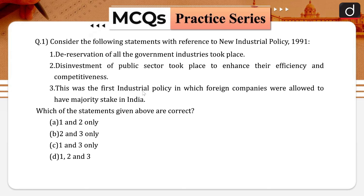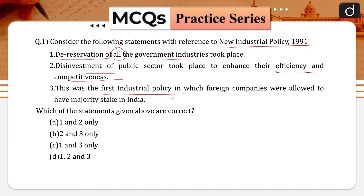The first question: consider the following statements with reference to the New Industrial Policy 1991. There are three statements. First, de-reservation of all the government industries took place. Second, disinvestment of public sector took place to enhance their efficiency and competitiveness. Third, this was the first industrial policy in which foreign companies were allowed to have majority stake in India.